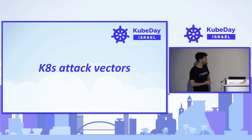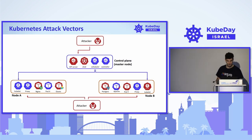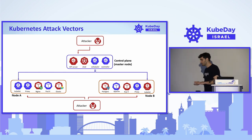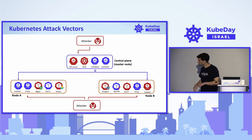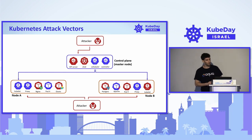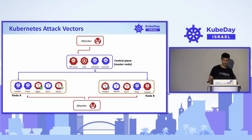Let's talk about Kubernetes attack vectors. A typical Kubernetes cluster consists of a control plane and nodes. On the control plane there's the API server, etcd, the scheduler, and the controller. On the nodes there are the kubelet, the proxy, and your applications. Each of these components could pose risk when misconfigured — from public-facing applications with CVEs and exploits, to misconfigured dashboards, misconfigured kubelet, and even misconfigured API servers. There are countless attack vectors into a Kubernetes cluster.